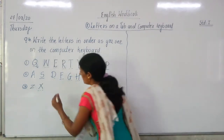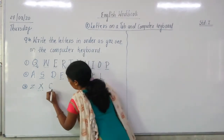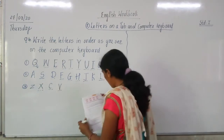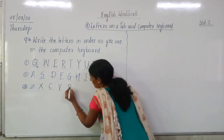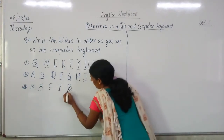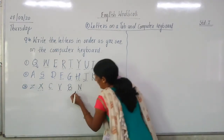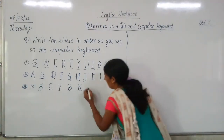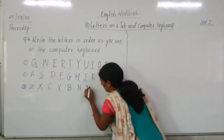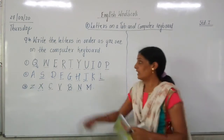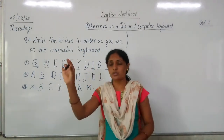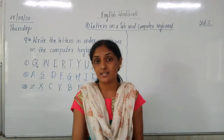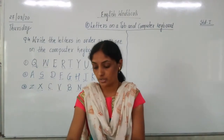After X is C, then V. After V is B, then N. And the last letter on the computer keyboard is M. In this way there are three rows of letters on the computer keyboard.